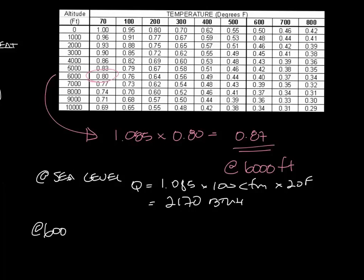Now at 6,000 feet, our equation becomes Q equals 0.87 times that 100 CFM times 20 degrees. And that equals 1740 BTU.